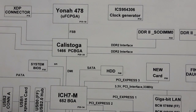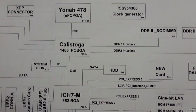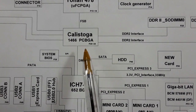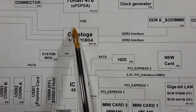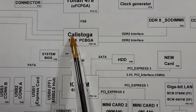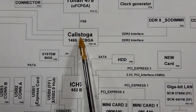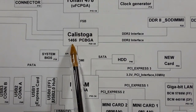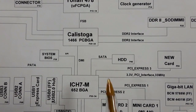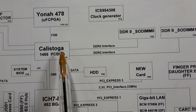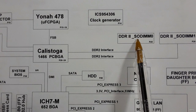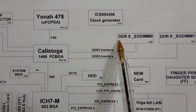You might ask: where is the graphics card? The graphics card is integrated with the GMCH, so this chip contains both the GMCH and the graphics card. That's why the GMCH is connected directly to the memory — the RAM, random access memory.